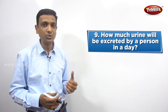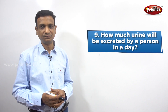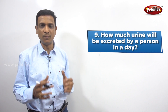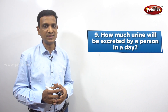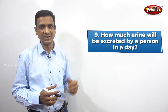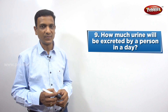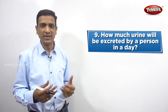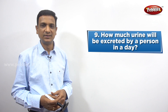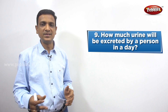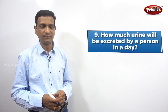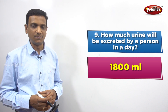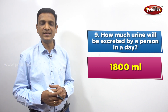In a normal person who drinks enough water and is properly hydrated, how much urine is excreted? Is it 1 liter, 1.5 liters, 1.8 liters, 2 liters, or 2.5 liters? It is approximately 1800 ml. So approximately 1800 ml of urine is excreted per day.